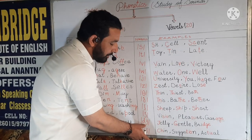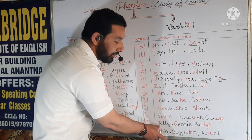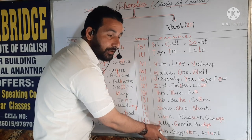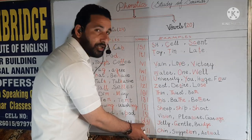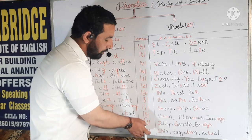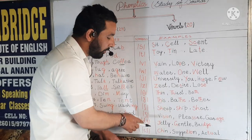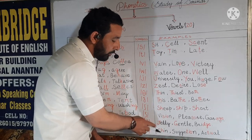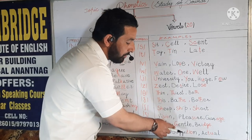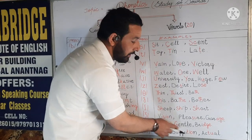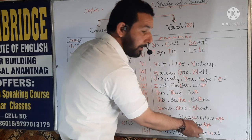Next sound is the DZ/J sound. For example, 'jelly', 'gentle', and 'bridge' — you have to lay more stress while pronouncing this sound. We have 'bridge' — the final sound is this DZ/J.